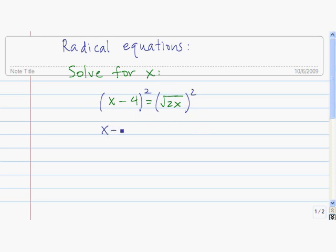So we have x minus 4 quantity squared is equal to the square of the square root of 2x, and that's just 2x.